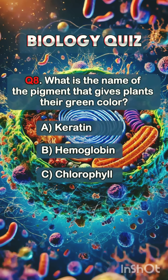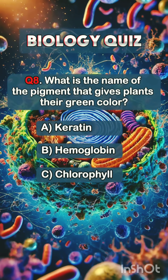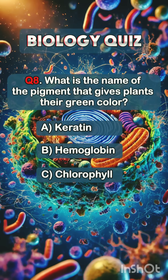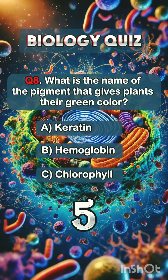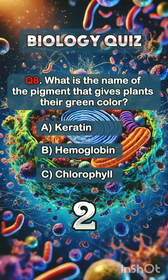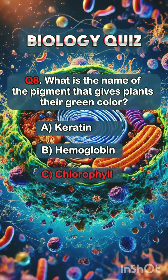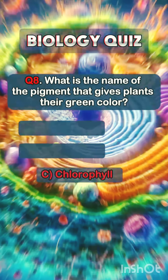Question 8. What is the name of the pigment that gives plants their green color? Answer C: chlorophyll.